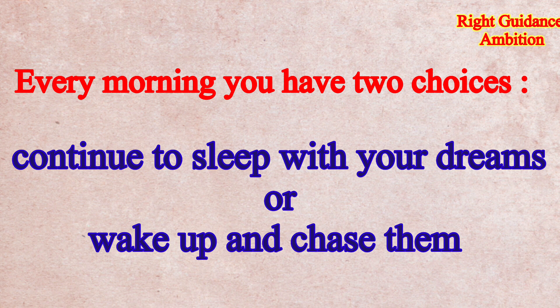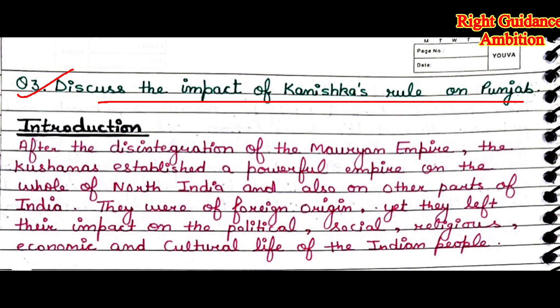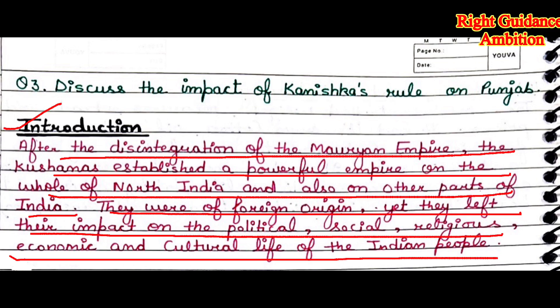Question number 3: discuss the impact of Kanishka's rule on Punjab. For the introduction: after the disintegration of the Mauryan Empire, the Kushans established a powerful empire over North India and other parts of India. The Kushans were of foreign origin, yet they left their impact on the political, social, religious, economic, and cultural life of the Indian people.